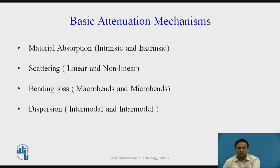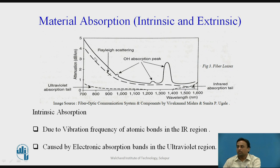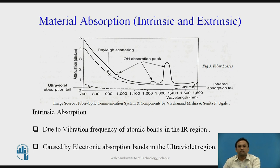Now let's see the details of material absorption — intrinsic and extrinsic. Absorption is a major cause of signal loss in an optical fiber. Absorption is the conversion of optical power into another energy form such as heat. Absorption in optical fiber is explained by three factors: imperfections in the atomic structure of the fiber material, intrinsic or basic fiber material properties, and extrinsic factors — the presence of impurities in the fiber material.